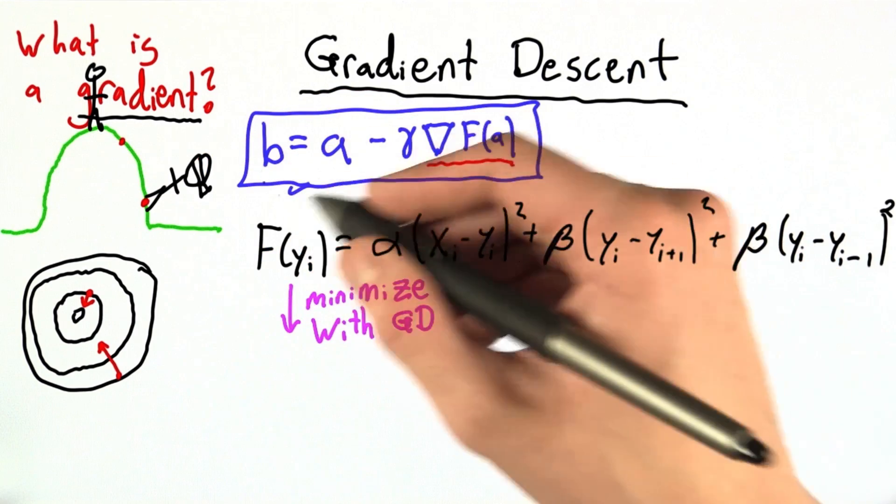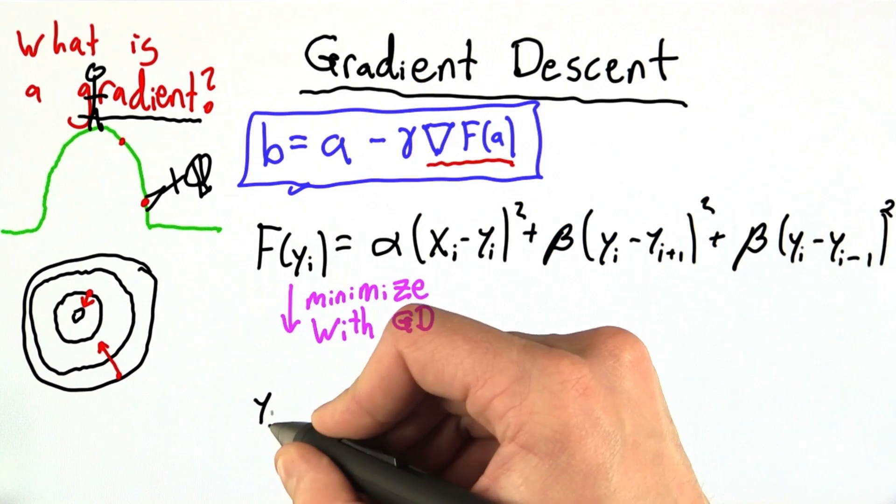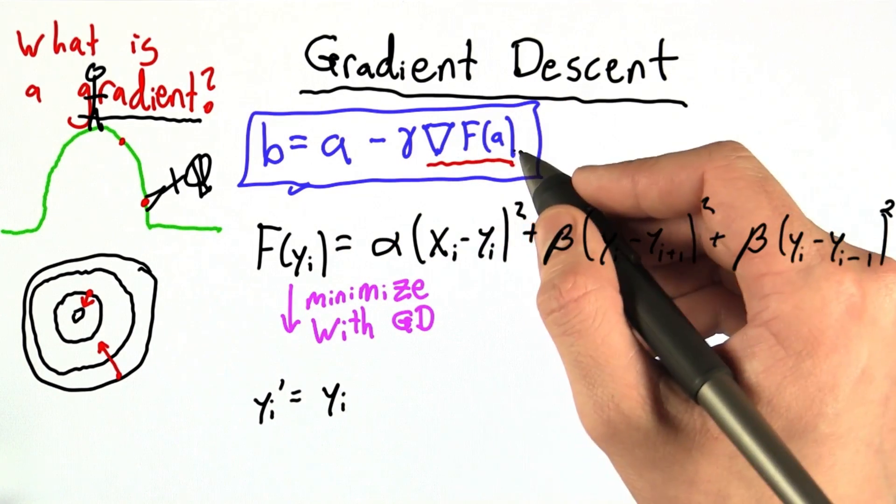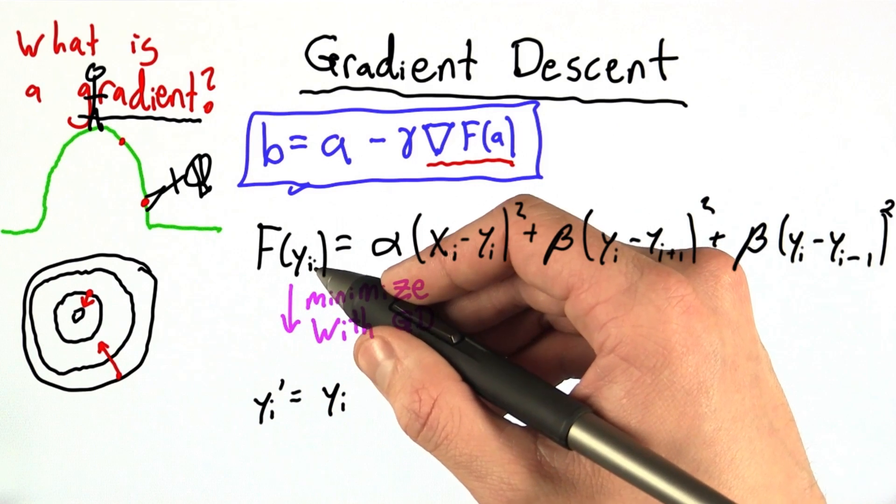So at each step, we're going to follow this. b, our new location, becomes yi prime. That's going to equal our old location, yi, and then minus this gradient. And the gradient here is just going to be the derivative with respect to yi.